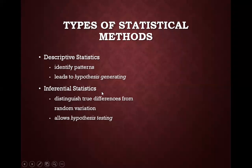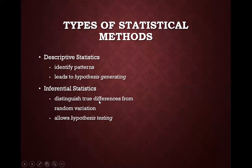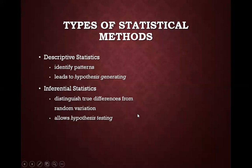Statistical methods can be divided into descriptive statistics and inferential statistics. Inferential statistics distinguishes true differences from random variation. Since you are taking a sample and not doing a census study, there is always some variation. It also allows for hypothesis testing — descriptive statistics suggests a hypothesis, whereas inferential statistics proves whether the hypothesis is right or wrong.